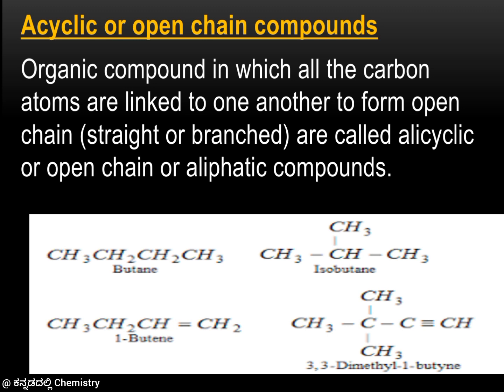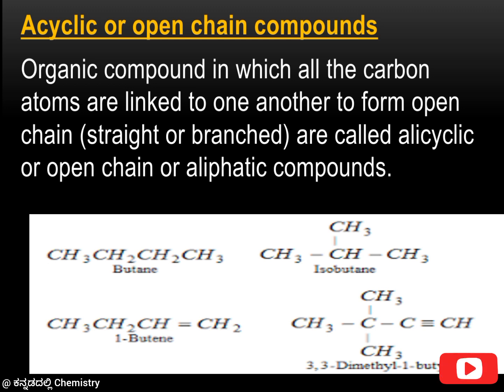For example, butane is an open chain compound. Butane carbon atoms can also form isobutane. You can add a double bond in the first, second, or third position. With 4 carbon atoms in butane, there is no cyclic ring, making these open chain or acyclic compounds.